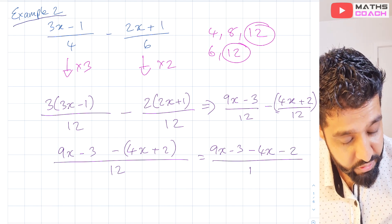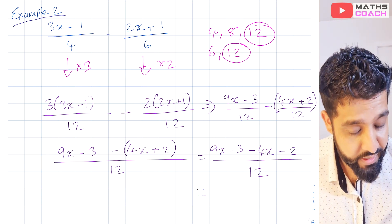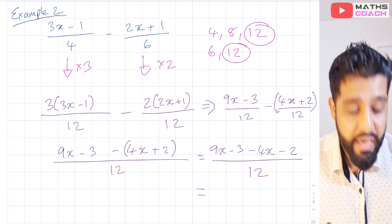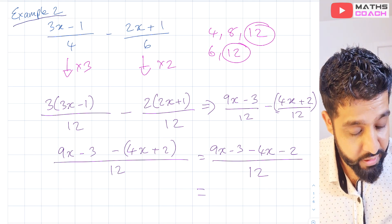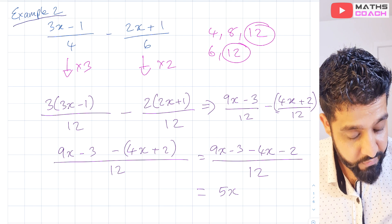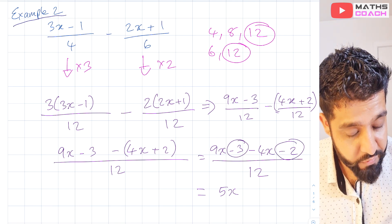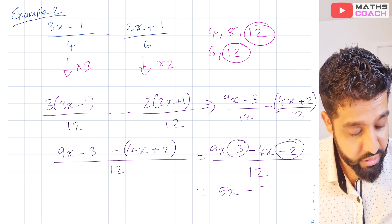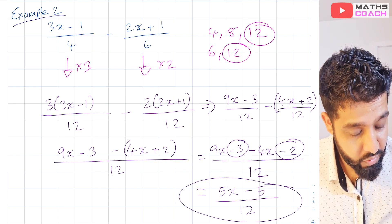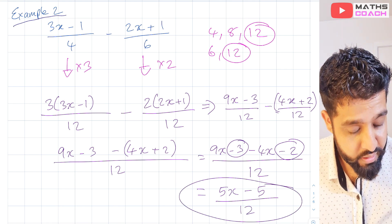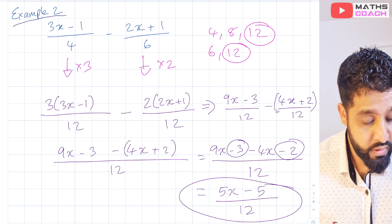So we get minus 2 when we open that bracket, then we collect like terms. 9x minus 4x gives us 5x, and minus 3 minus 2 gives us minus 5. Our final answer is (5x minus 5) over 12.